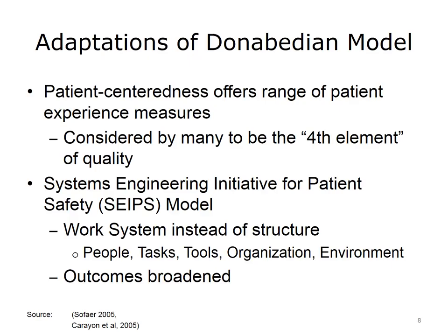Another modification of Donabedian's original formulation is known as the SEEPS model. Carrion and her associates broadened the concept of structure to include what they call the work system as a key influencer on process and ultimately outcomes. The work system includes the people, the tasks they do, the tools such as EHRs and others that they use, as well as the organizational structure and the internal and external environment. They also broadened the conception of outcomes to include not just patient health outcomes, but organizational outcomes as well. In this SEEPS model, the direction of influence is often bidirectional among the various parts. Given the link between quality and reimbursement and the use of technology in value-based care, this broader conception may be particularly useful.